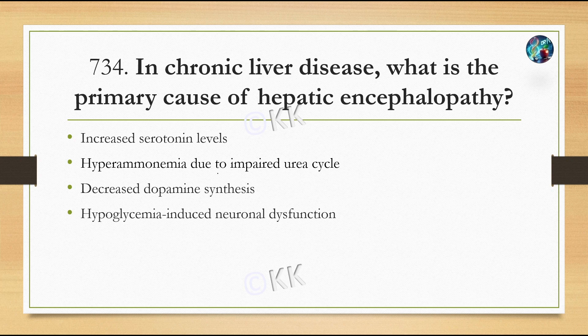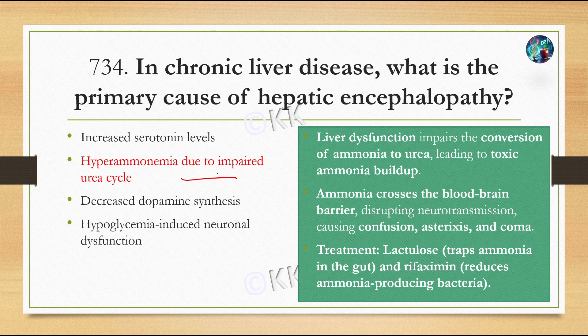Liver dysfunction impairs the conversion of ammonia to urea, leading to toxic ammonia buildup. Ammonia crosses the blood-brain barrier and disrupts neurotransmission, causing confusion, asterixis, and coma. Treatment includes lactulose, which traps ammonia in the gut, and rifaximin, which reduces ammonia-producing bacteria.